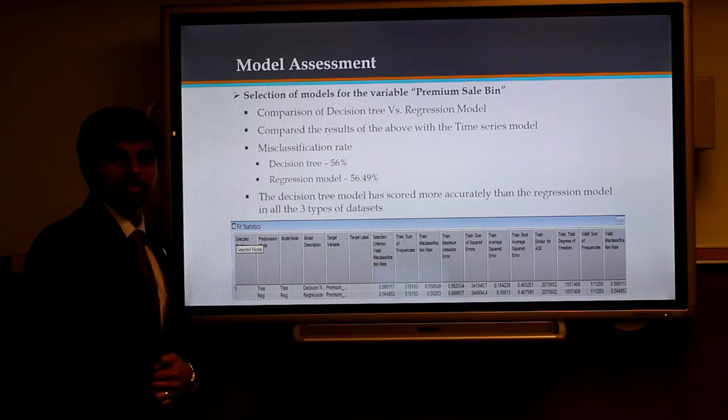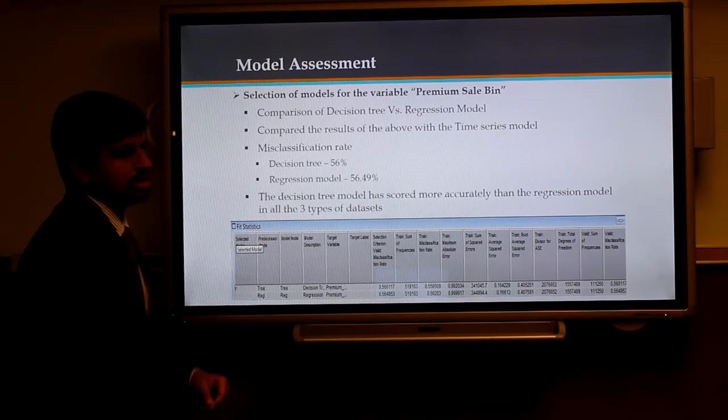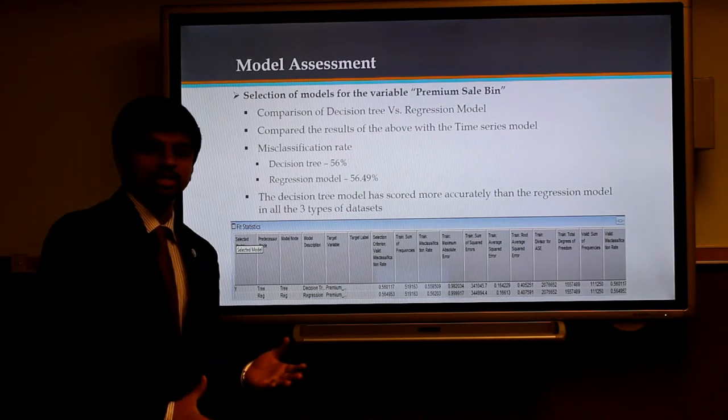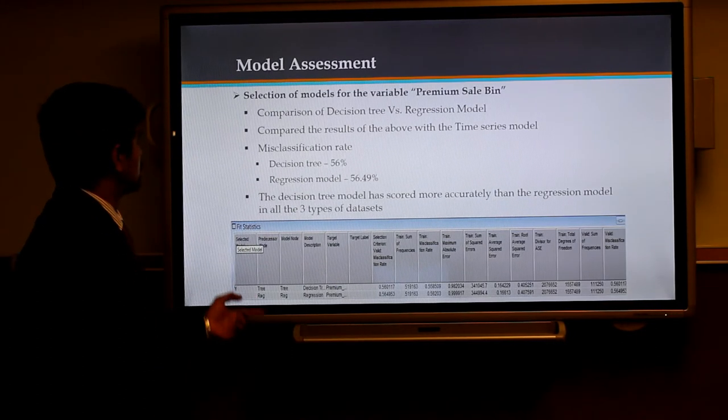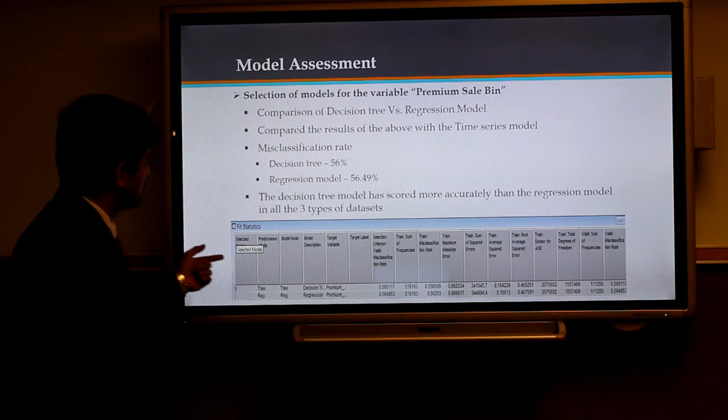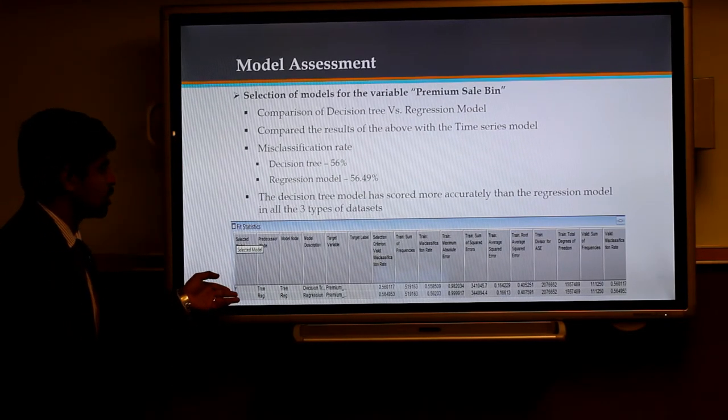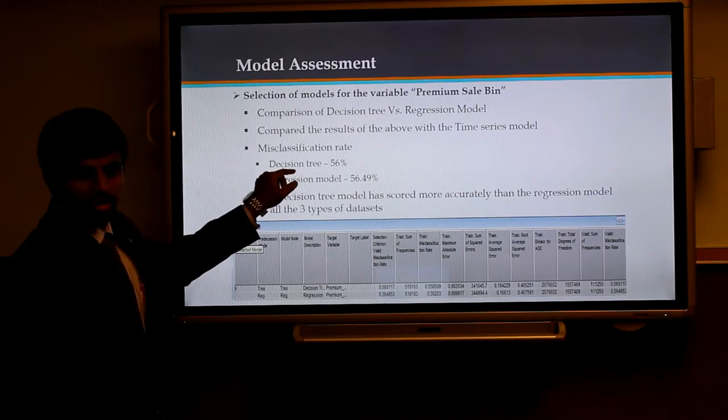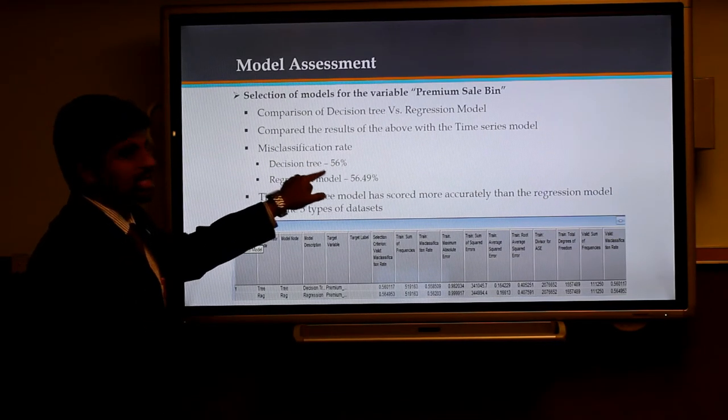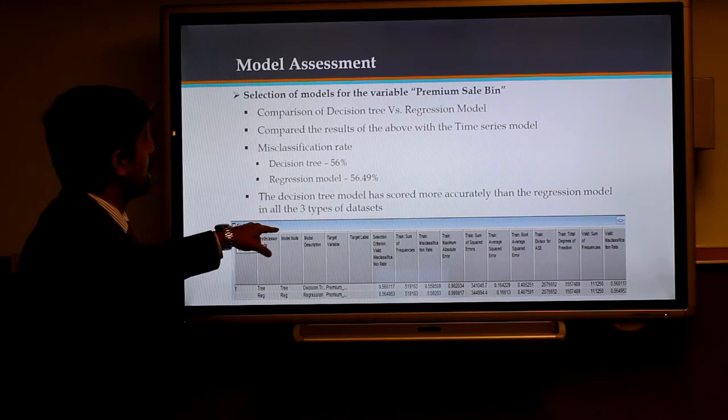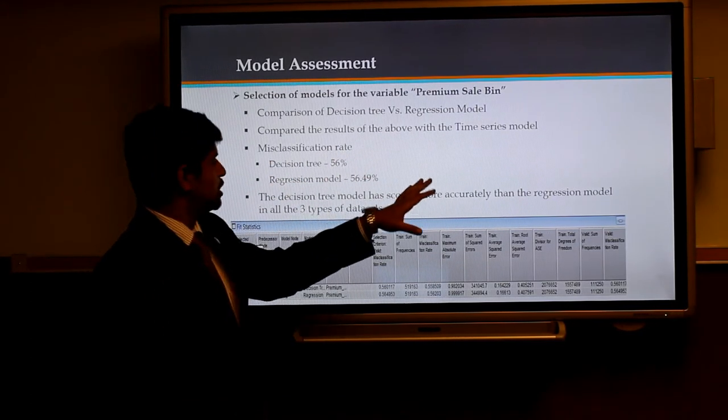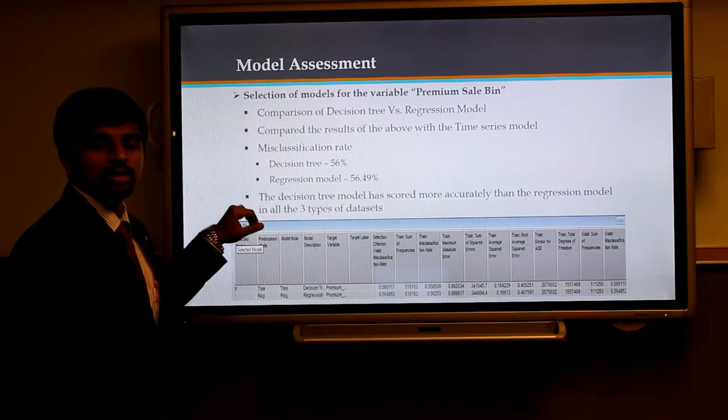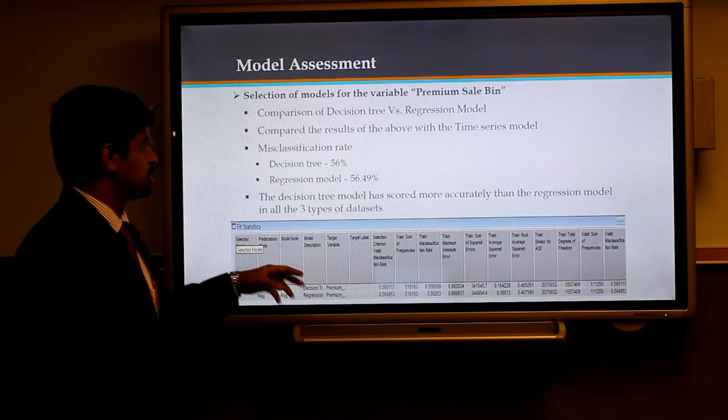Now we will see the model assessment part. The first one is for the selection of the variable premium sale bin where we compared the decision tree and logistic regression model. When comparing these two models, we got the result as the decision tree being selected as the best model. This was based on the misclassification rate criteria where you can see the decision tree has the least misclassification rate compared to the regression model. With this result, we compared it with the time series model. We scored the data and from scoring the data, we saw that the decision tree model had better scoring compared to the logistic regression model.